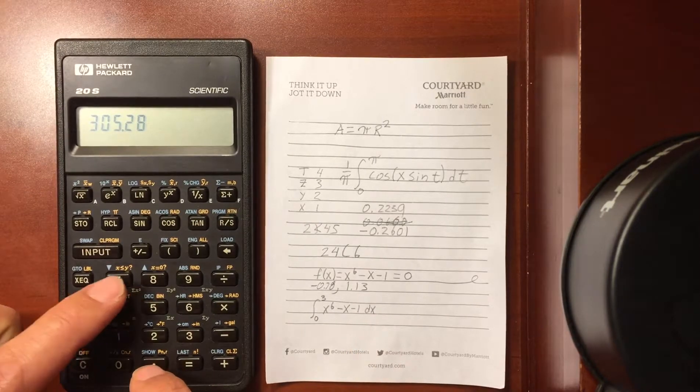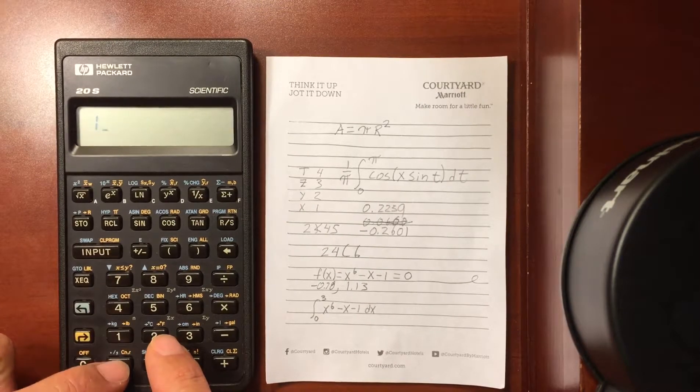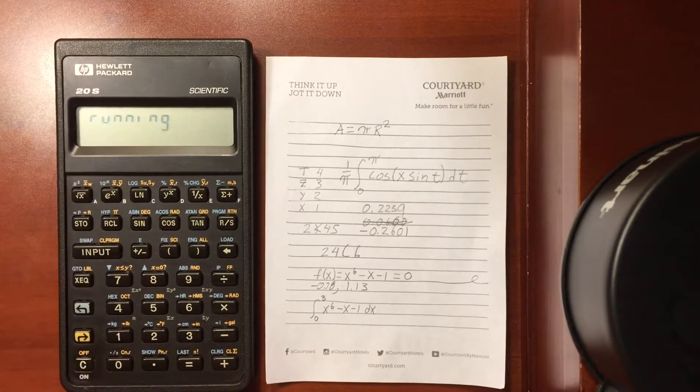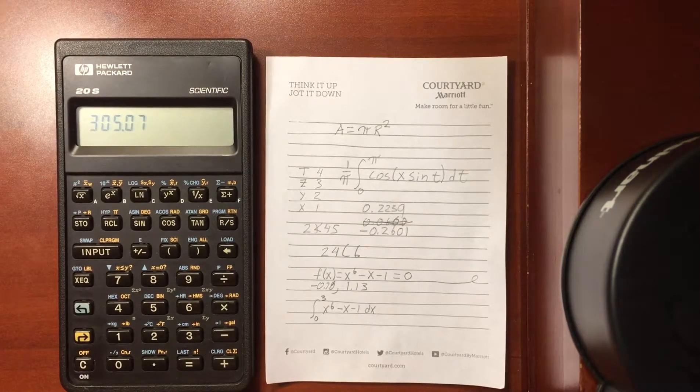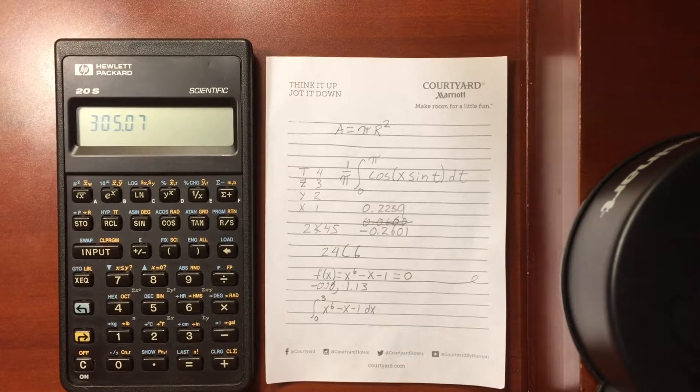If we do, say, ten intervals and execute, we should have a slightly more accurate number there.